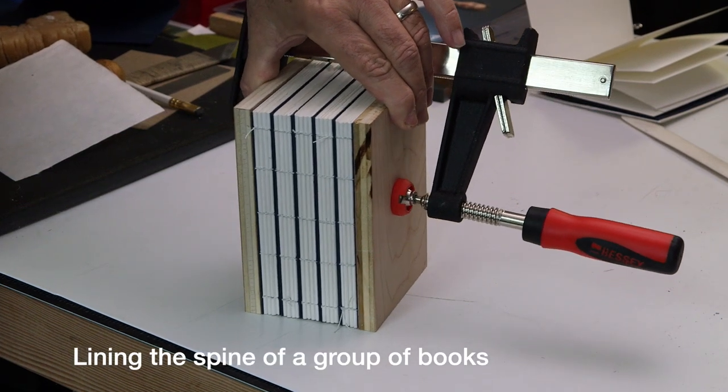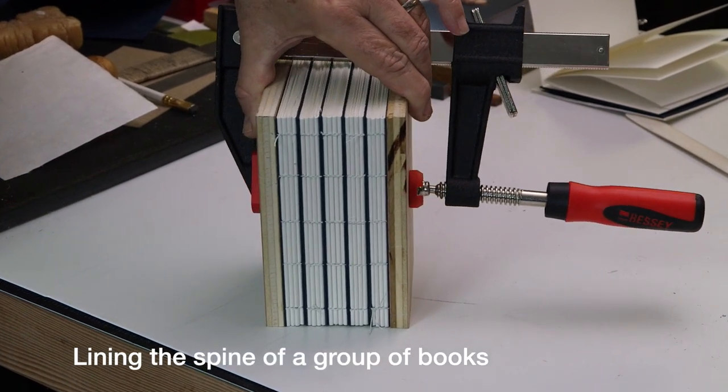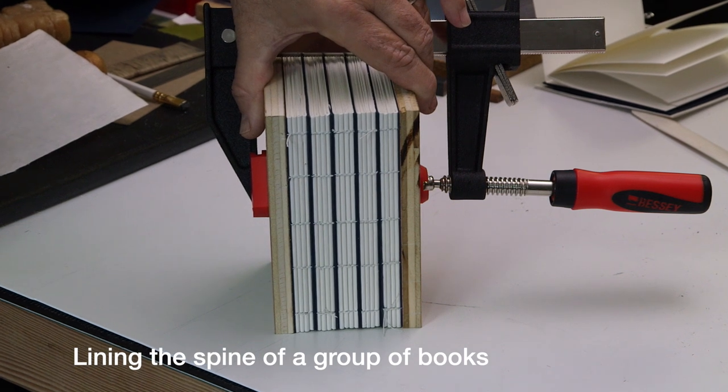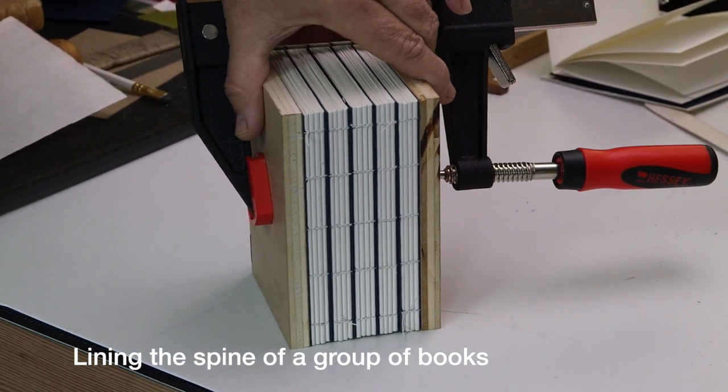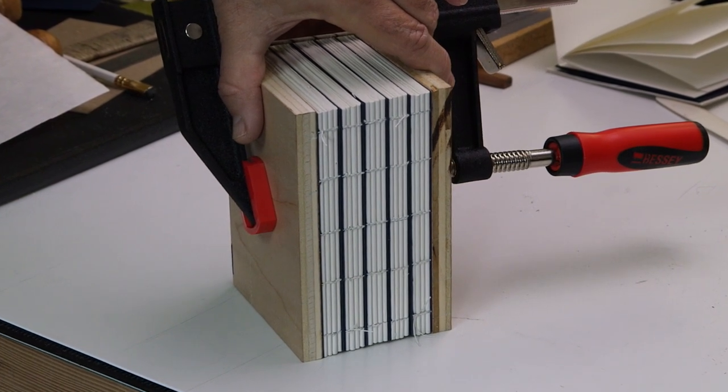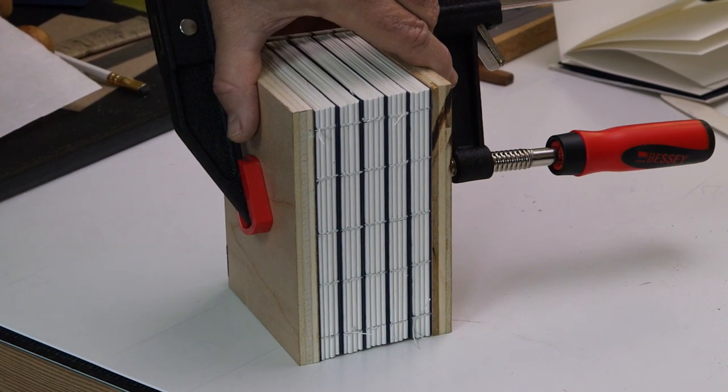I have finished sewing the five books. I've let them sit overnight between these boards in the clamp. Next I'll show you how I will apply adhesive and line the spines with PVA and paper to the group of books.